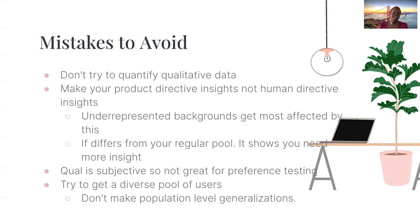Secondly, you want to make product-directive insights, not human-directive insights. This is especially important if you are doing user studies that include underrepresented backgrounds, as they get most affected by this. For example, if you run a study and you have one African-American participant and they happen to be an outlier on a certain task, you don't want to summarize by saying 'African-Americans have issues finding this button.' Instead, focus on what were the product insights from the study. However, if a certain underrepresented group consistently differs from your regular pool, that may be insight that you need to collect more data — maybe just for that specific background. But again, you don't want to give human-directive insights.